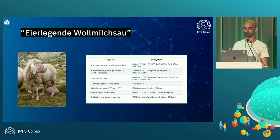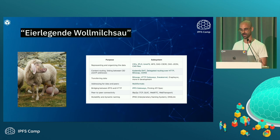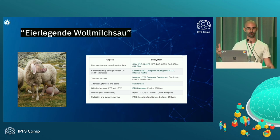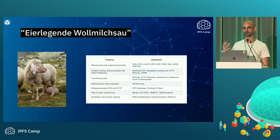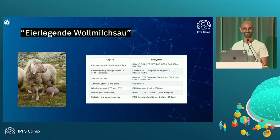It's hard not to mention the Eierlegende Vollmilchsau — a German term for a mythical creature that does everything: produces wool, milk, lays eggs, and you can eat its meat. The analogy is that IPFS in its current form does so many different things that if you're a newcomer as a developer, it's hard to understand what it's doing for you — which problem is it exactly solving? Is it the wool or the milk?